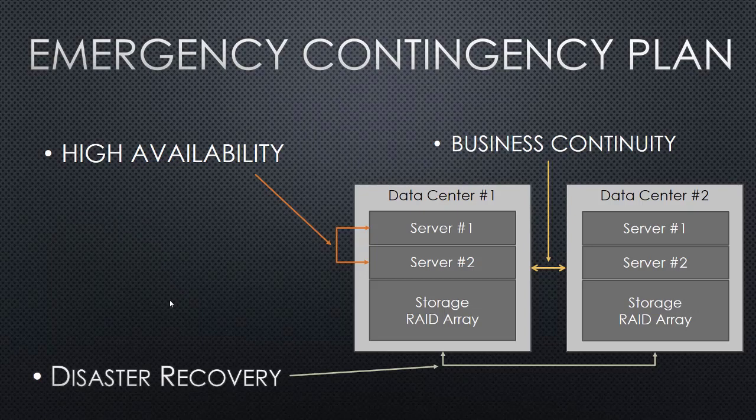Next we'll talk about emergency contingency planning. There are three components to that: high availability, business continuity, and disaster recovery. In modern PACS infrastructure, we use what are called virtual machines. The servers in this instance are going to only contain CPUs and RAM, and then the storage RAID array is where all the hard drives are. If you think about the cell phone that you're holding, it's got one hard drive, one CPU, and some RAM. If any of those three components were to go bad, your phone would no longer work. So we don't want to have that same thing happen to PACS.